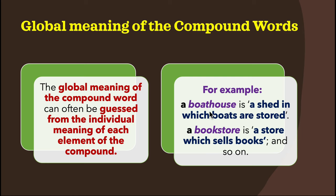Verb + noun = noun (e.g., call girl, dance hall). Adjective + noun = noun (e.g., darkroom, highbrow). Noun + adjective = adjective (e.g., year-sick, bottle-green). Pronoun + noun = noun (e.g., she-pony, she-goat). Preposition + verb = verb (e.g., overtake, undergo). Preposition + noun = noun (e.g., onlook, off-day), etc.